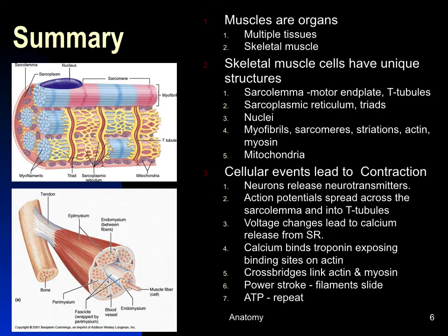To summarize: muscles are organs made up of multiple tissues. Skeletal muscle cells are always held together by connective tissue, which surrounds the entire muscle and divides it into bundles called fascicles by the perimysium. Individual cells are separated by other connective tissues. There are always blood vessels and nerves in the muscle, making it a true organ. The primary material for contraction is skeletal muscle tissue.